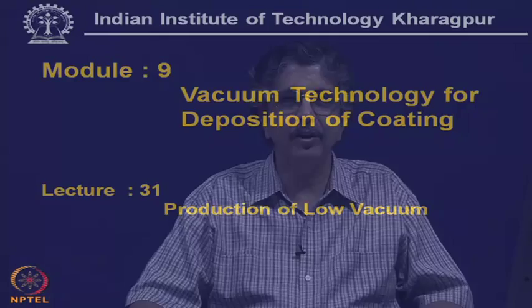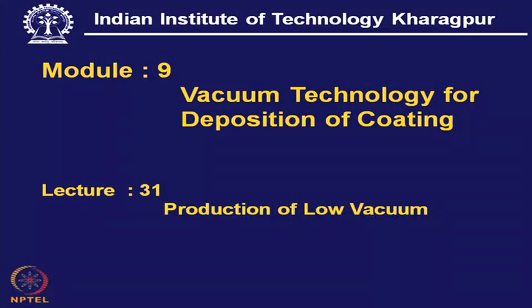In this topic, we like to understand the role of vacuum technology in the deposition of surface coating. Whenever we conduct a process of deposition, it can be CVD, PVD, it can be some spray process, it can be coating by wetting, it can be electro deposition.